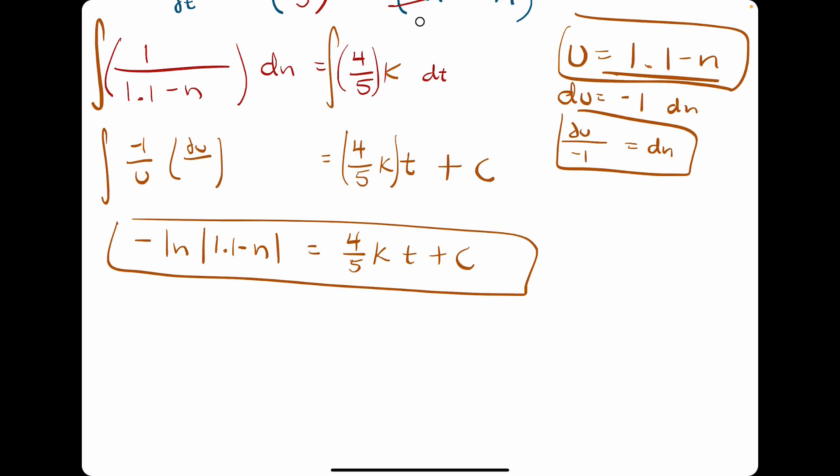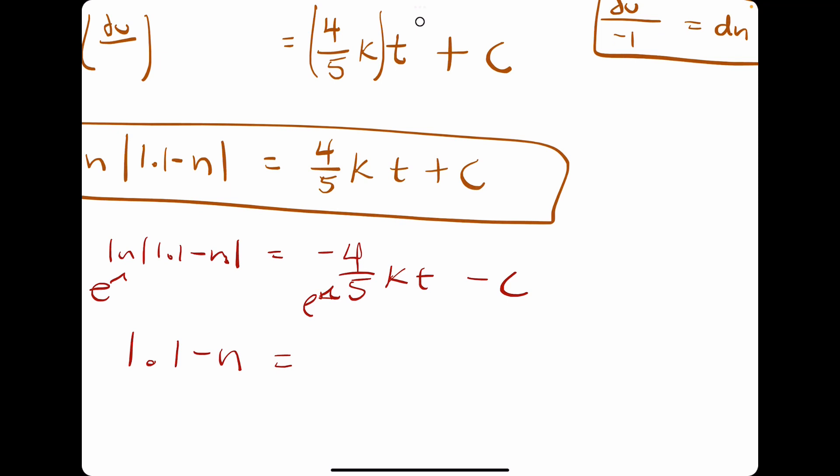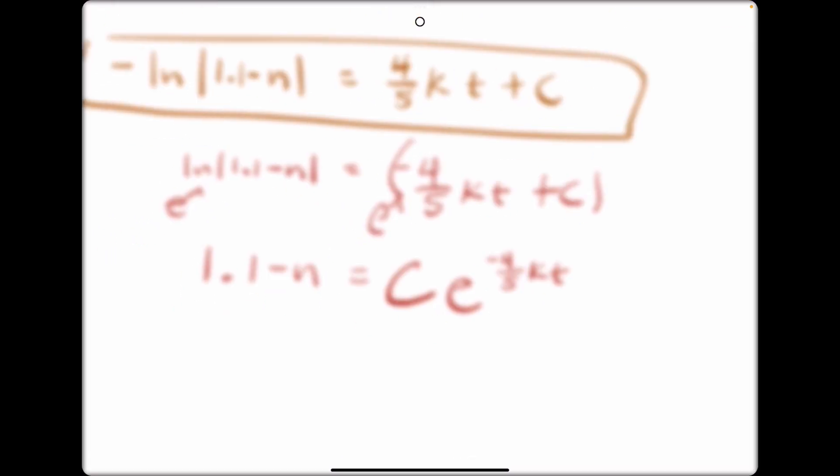We are going to get n by itself first. So what we're going to do is negate both sides. Divide by negative 1 to get this ln of 1.1 minus n by itself. So negating everything over here. Call this minus c. And then we will take e and make it the base of both sides. So we'll have 1.1 minus n. And because we negated c, but c was just a constant, I'll just say that was just plus another constant c. And then from here, if we have e to all this, we can jump to the point where we just have c times e to the negative 4 fifths kt. So in taking e, raising it to this, I've simplified it to this.